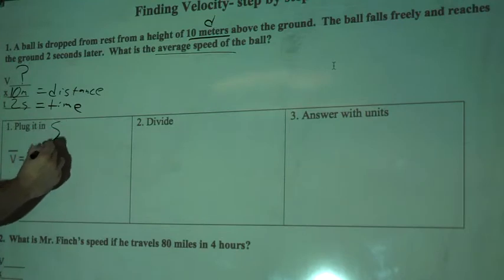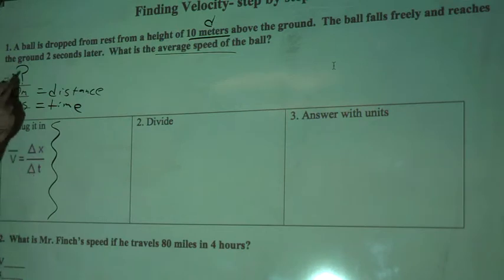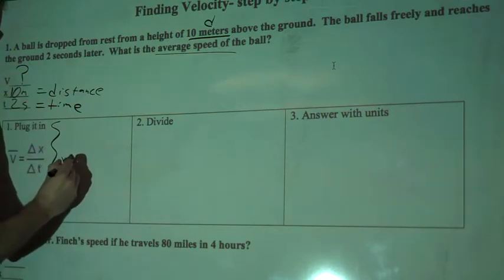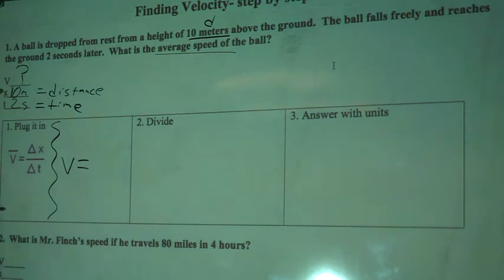First step, we're going to plug in our values. I've got velocity equals change in x over change in t. I don't know my velocity so I'll keep v right there. And then change in x. I know that we had 10 meters from the beginning of its fall to the end.